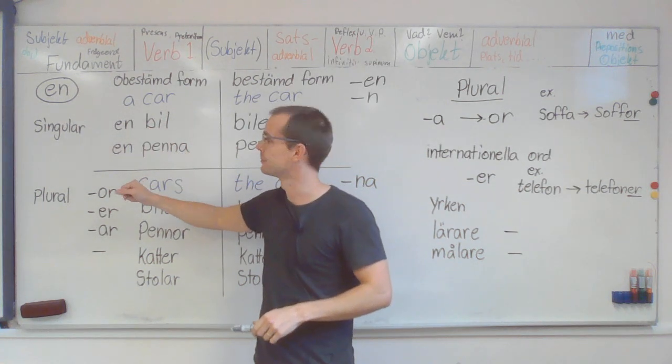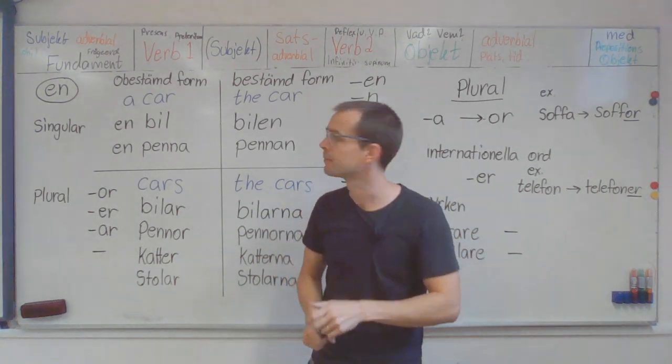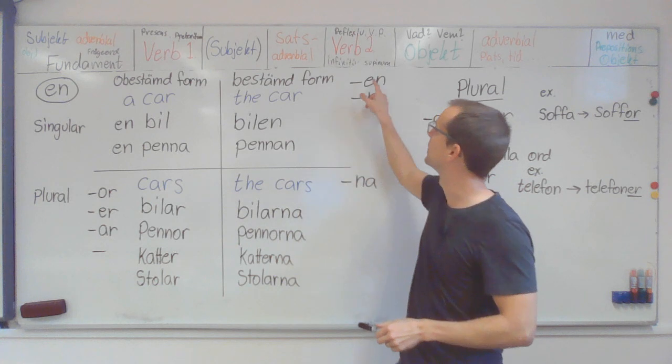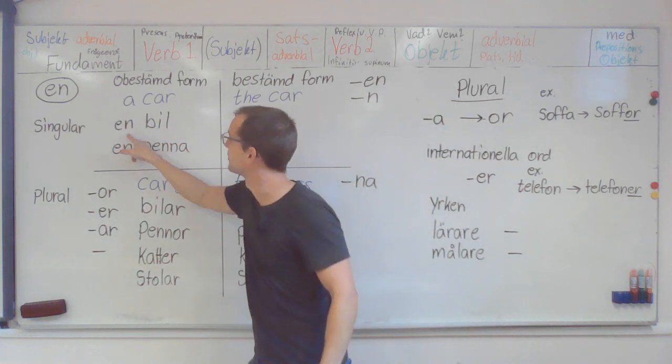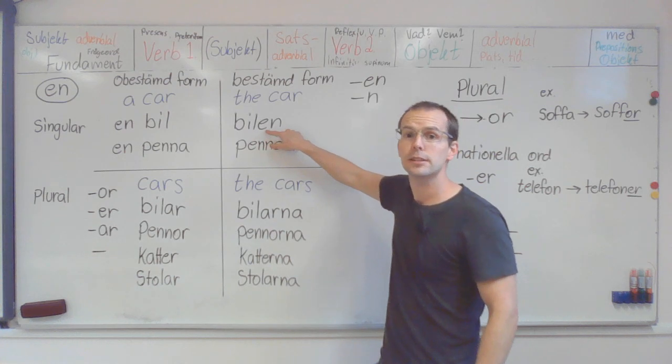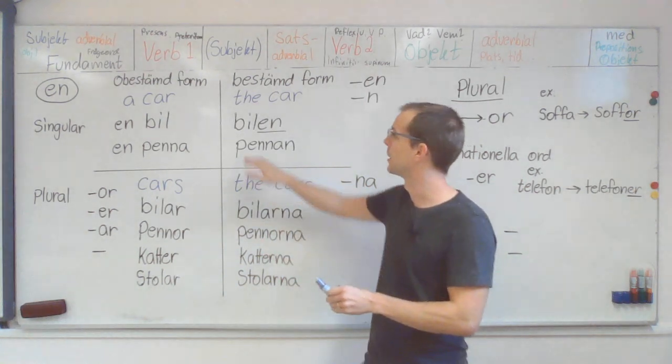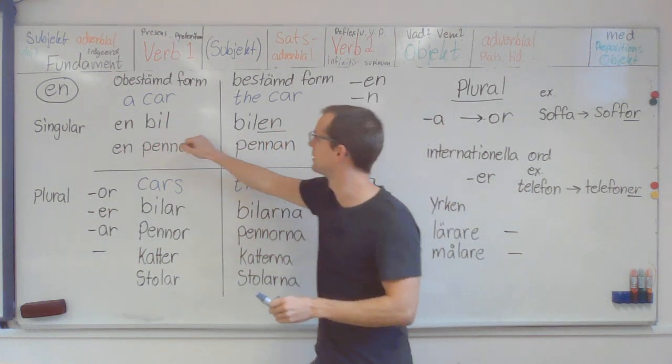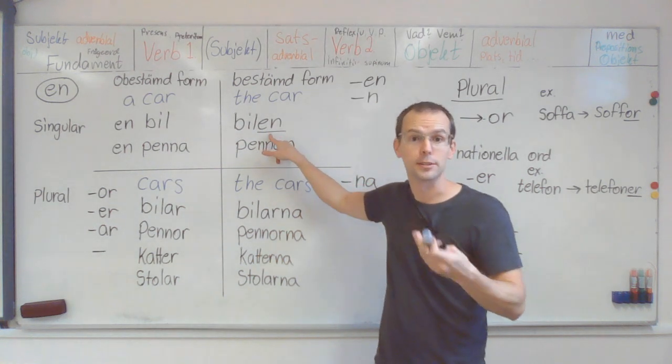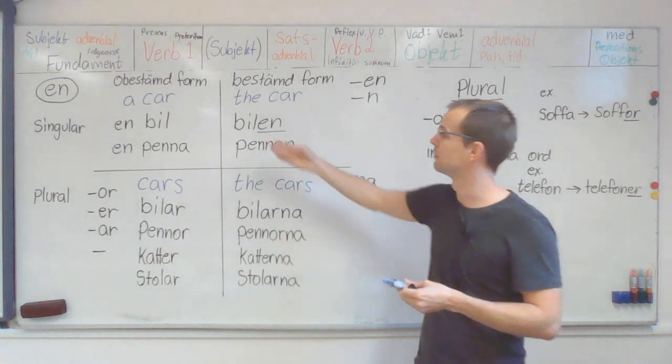Well, the first one is fairly easy. You have a car and bil, which is the same. But over here, determined form, we have the article en. And the article becomes a suffix on the word. So the car, bilen. En bil, bilen. So the article becomes a suffix. You see it here. En, bilen.